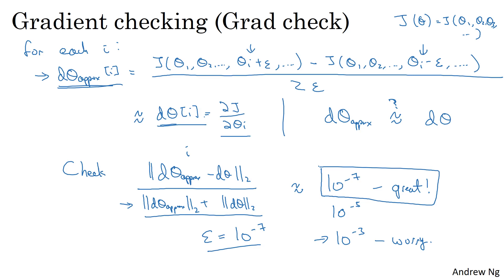So when implementing neural network, what often happens is I'll implement forward prop, implement back prop, and then I might find that this grad check gives a relatively big value. And then I would suspect that it must be a bug. Go in, debug, debug, debug. And after debugging for a while, if I find that it passes grad check with a small value, then you can be much more confident that it's then correct.